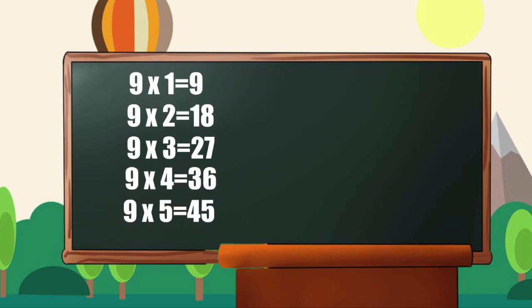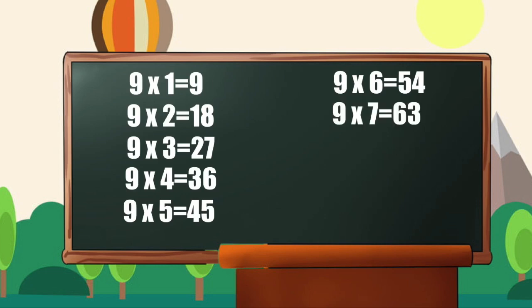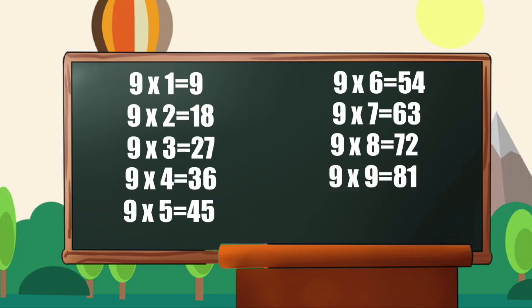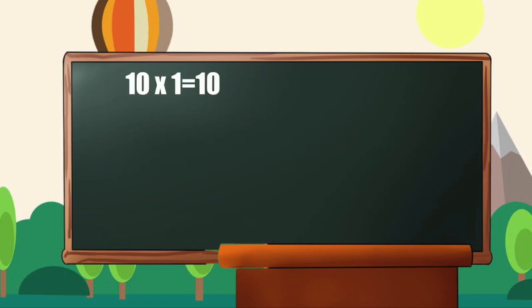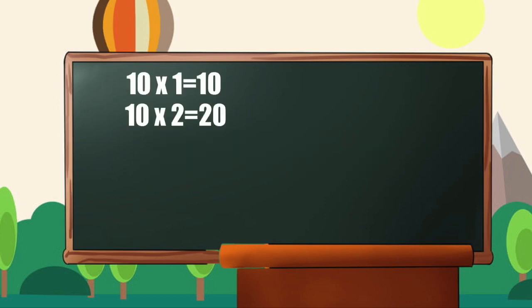9 5s are 45, 9 6s are 54, 9 7s are 63, 9 8s are 72, 9 9s are 81, 9 10s are 90. Table of 10: 10 1s are 10, 10 2s are 20, 10 3s are 30.